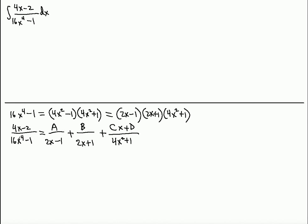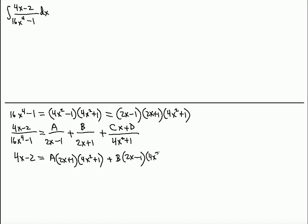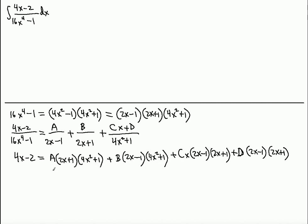If we multiply both sides of this equation by the denominator, we will have only the numerator remaining. A will have to multiply (2x + 1)(4x² + 1), plus B will multiply (2x - 1)(4x² + 1), then Cx multiplies (2x - 1)(2x + 1), and finally D will multiply (2x - 1)(2x + 1) as well.